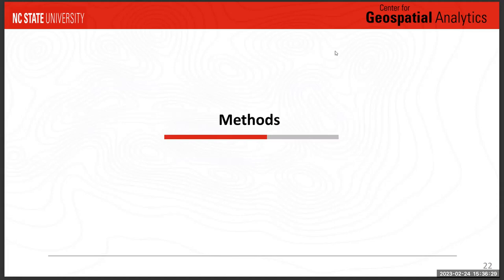To address these aims, we used adaptive kernel density estimation to calculate spatial relative risk and spatiotemporal relative risk. We chose this methodology because it's nonparametric and adapts depending on the density of the farms — it would adapt accordingly for a very dense region versus a low-density region. The formulas are similar, with the exception that the spatiotemporal version includes a time step, which in our study were weekly time steps of outbreaks. The log f-hat represents the density estimates for the cases, and the log g represents the density estimates for the controls.